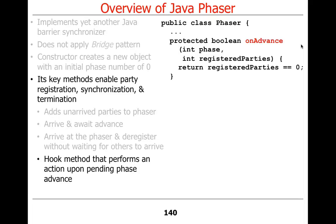The last method is a really interesting one called onAdvance. OnAdvance is a hook method — a callback invoked by another method that gives you a chance to override or customize behavior, like the template method pattern. The default behavior of onAdvance checks whether there are any registered parties, and if there are none, it terminates the phaser, since everyone has left. That's the typical way you terminate things.